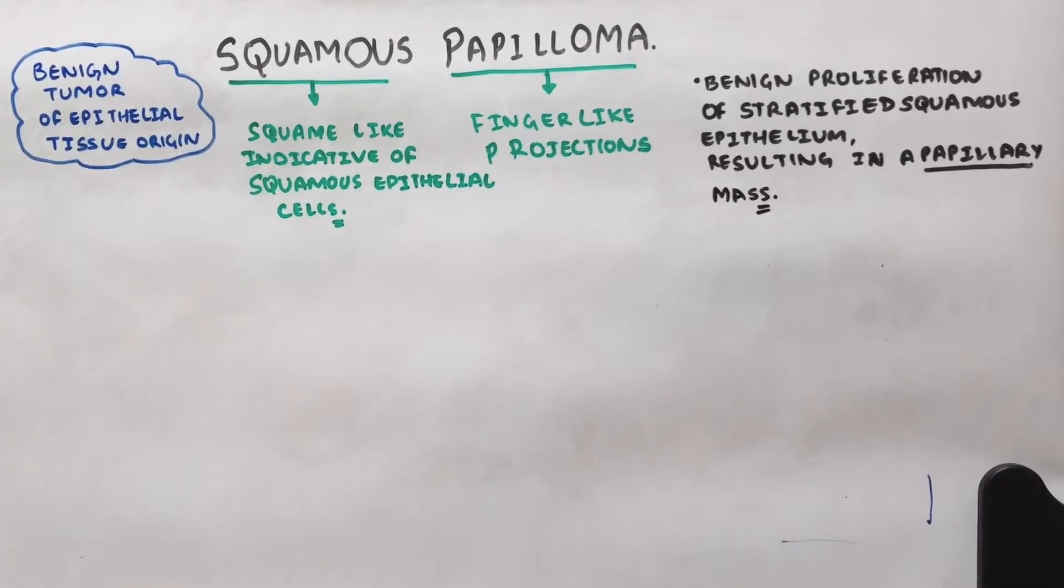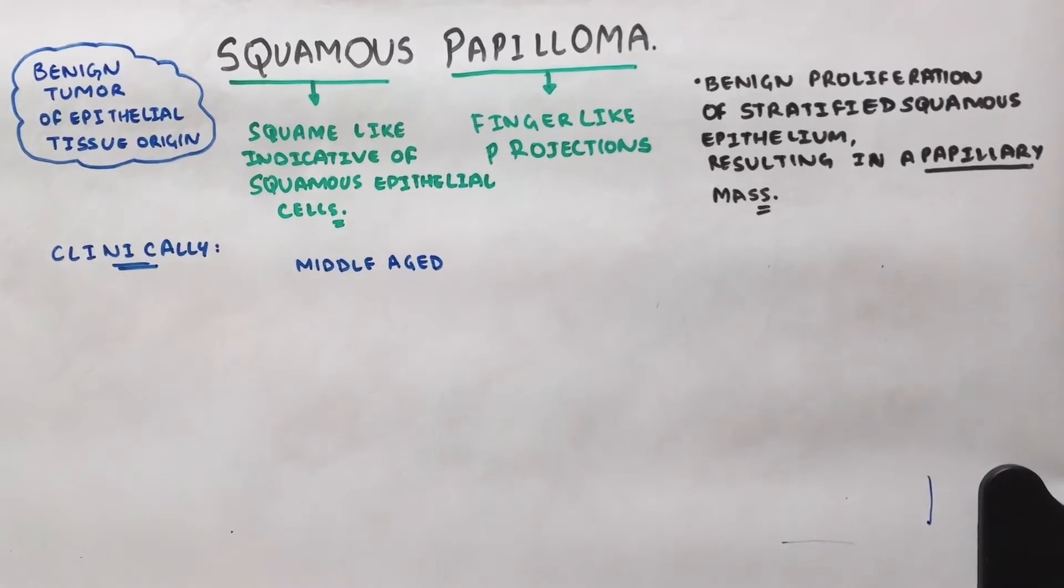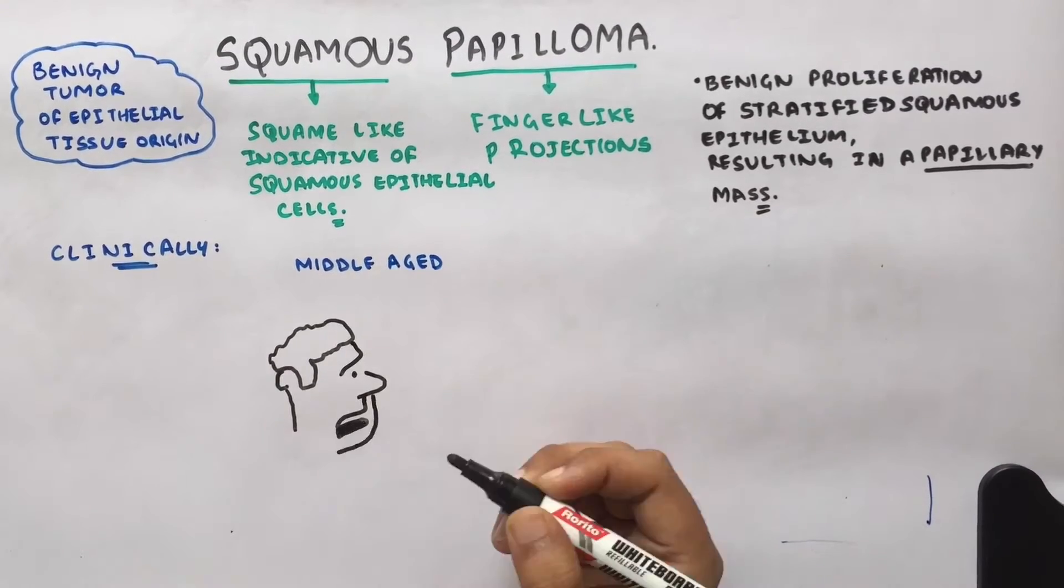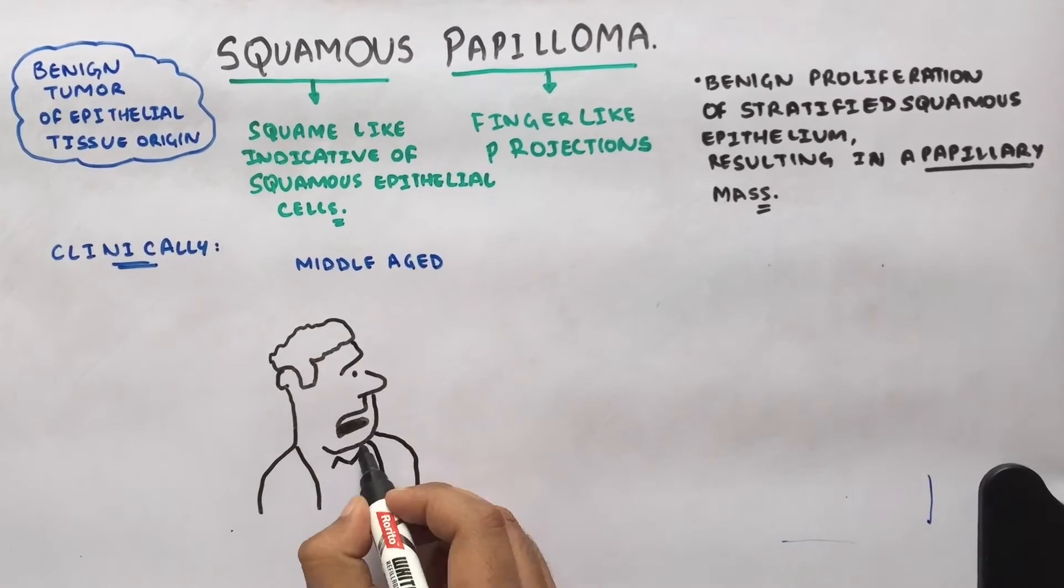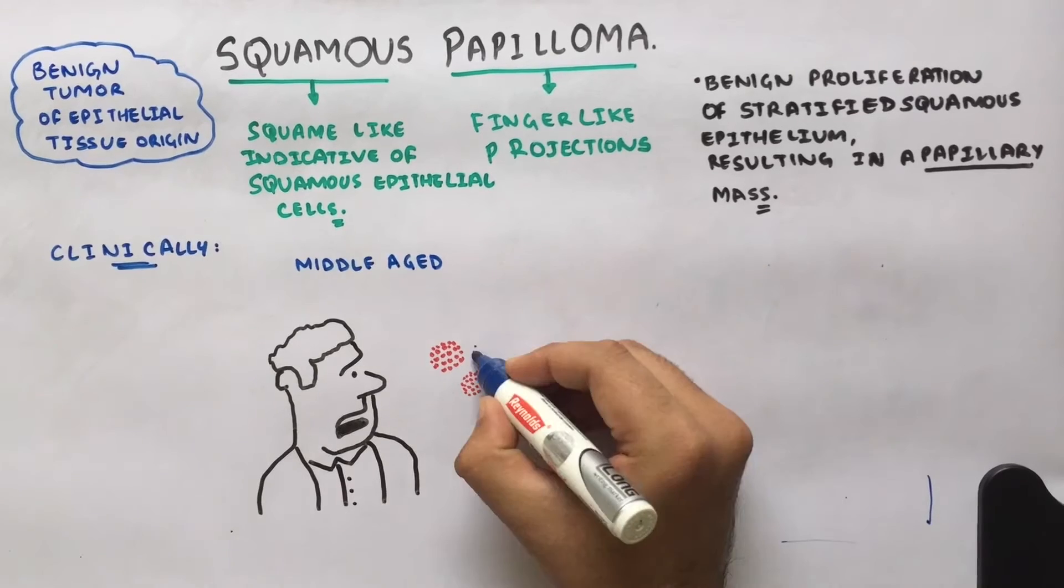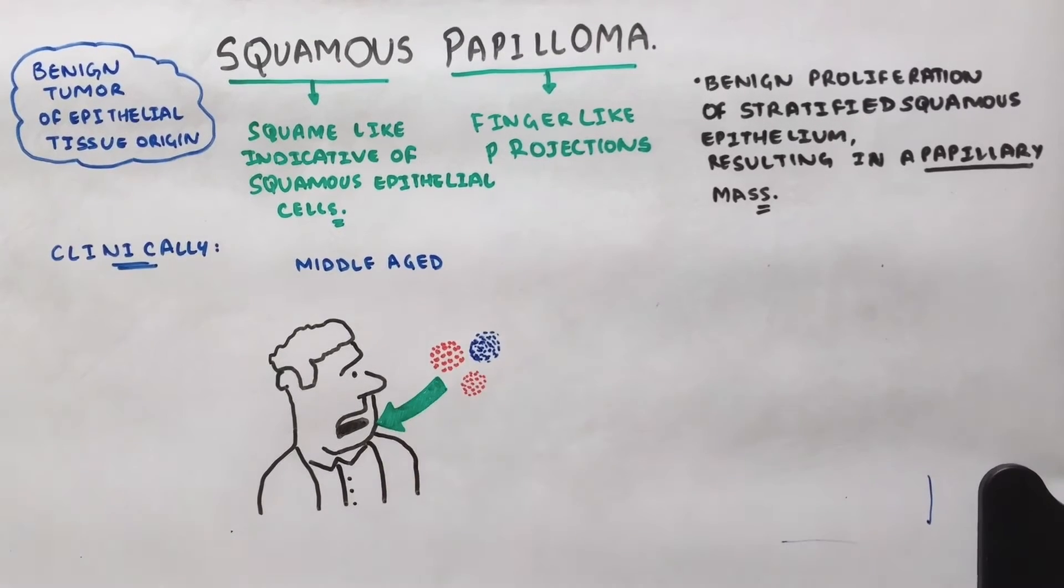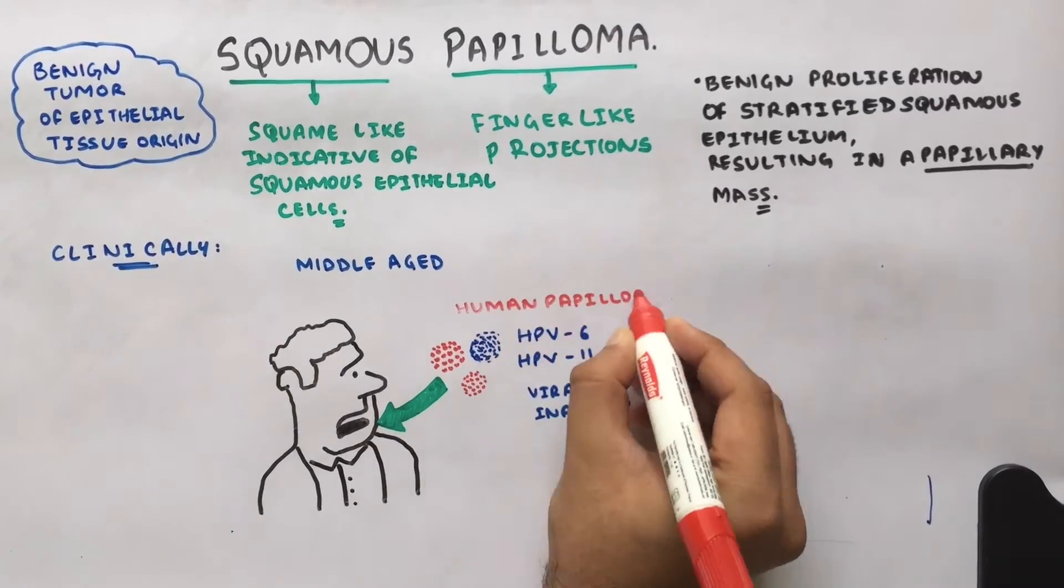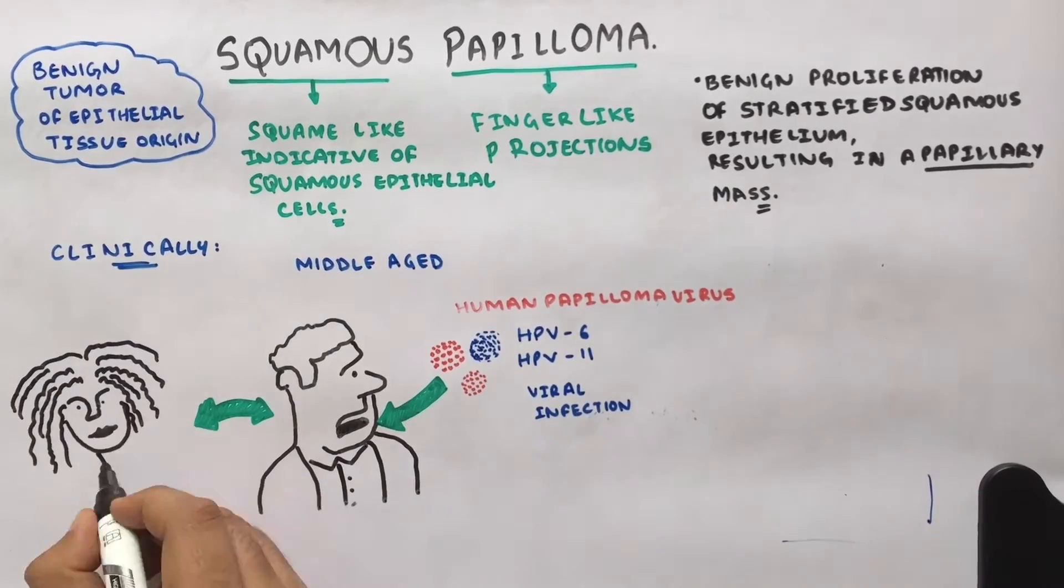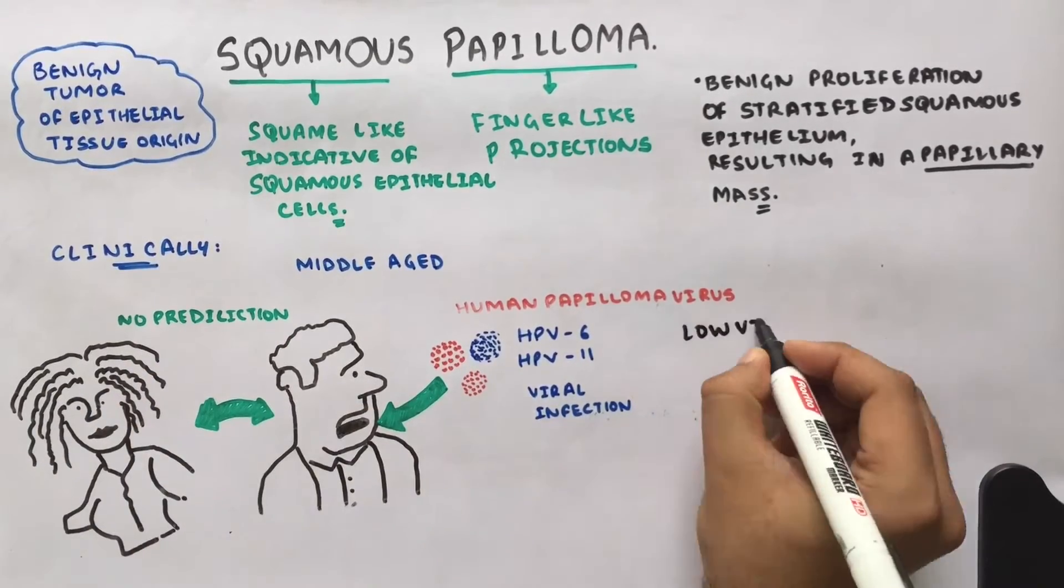Clinical features: this lesion is common in middle-aged patients, caused by human papilloma virus. HPV-6 and HPV-11 are common causative agents. Going with the sex predilection, the lesion is common in both males and females.